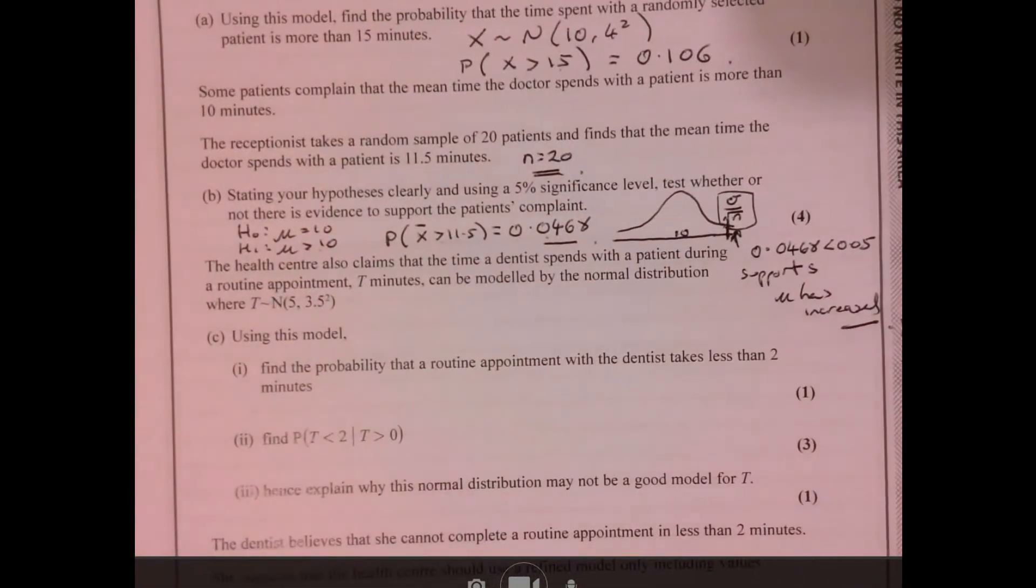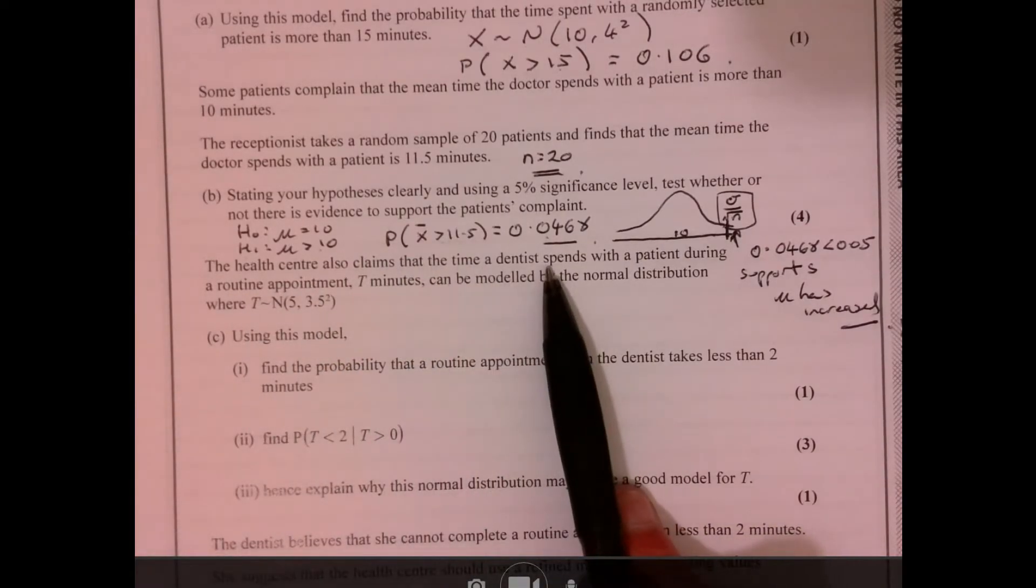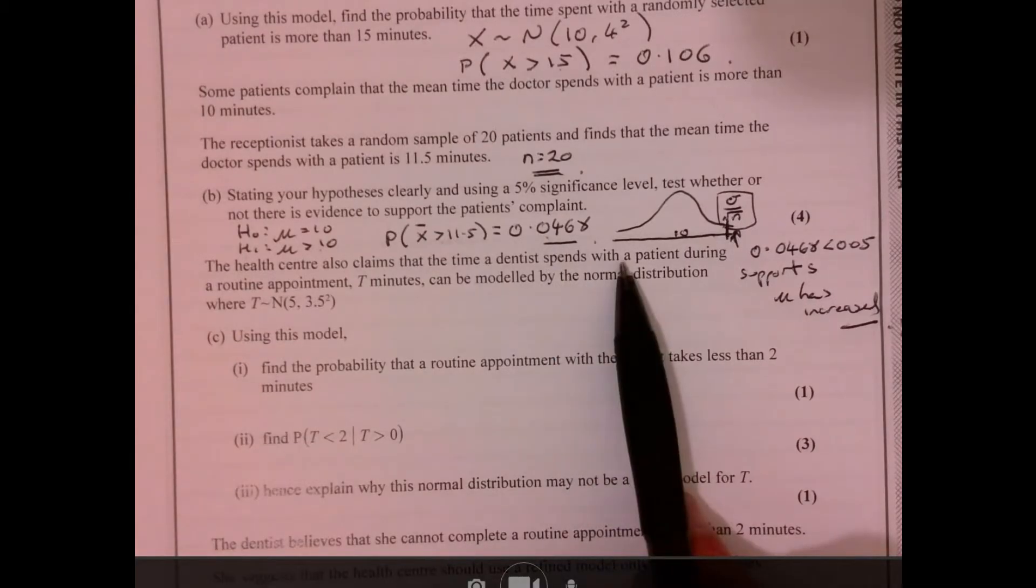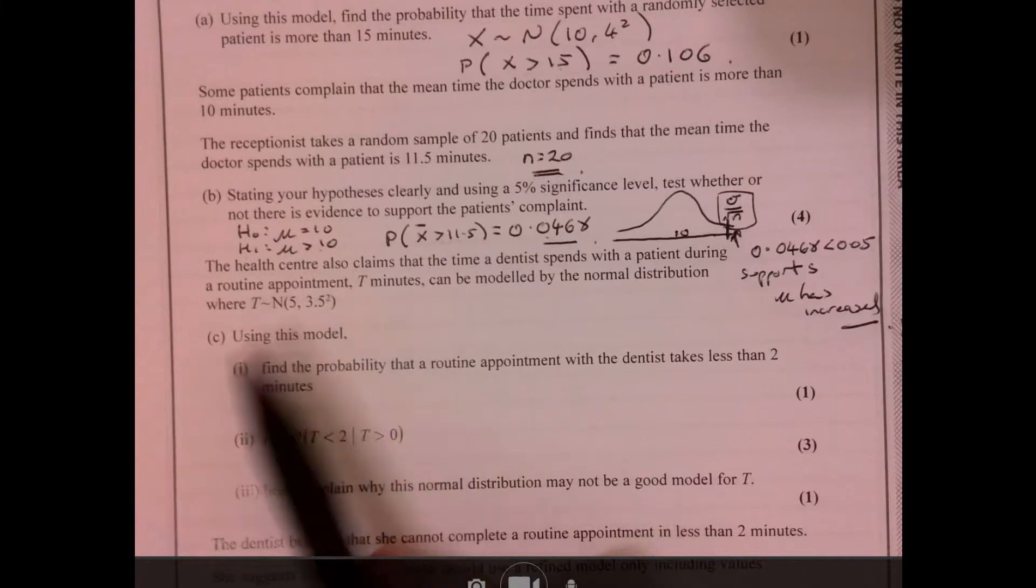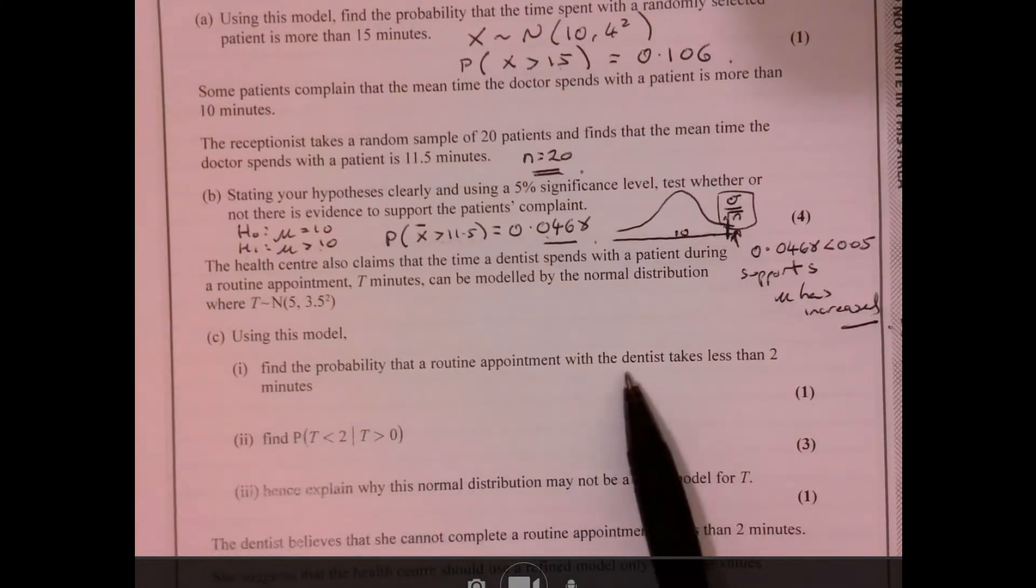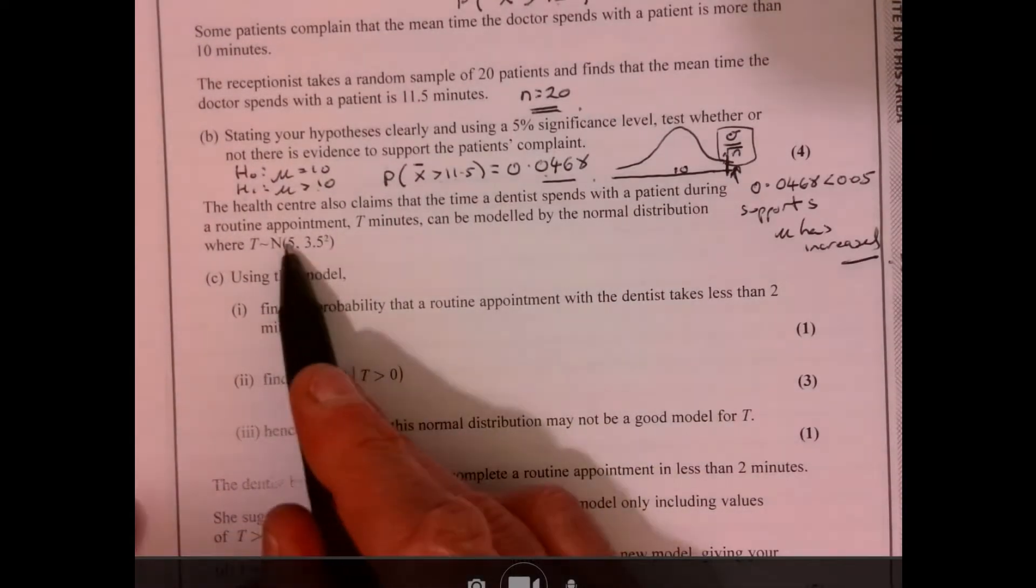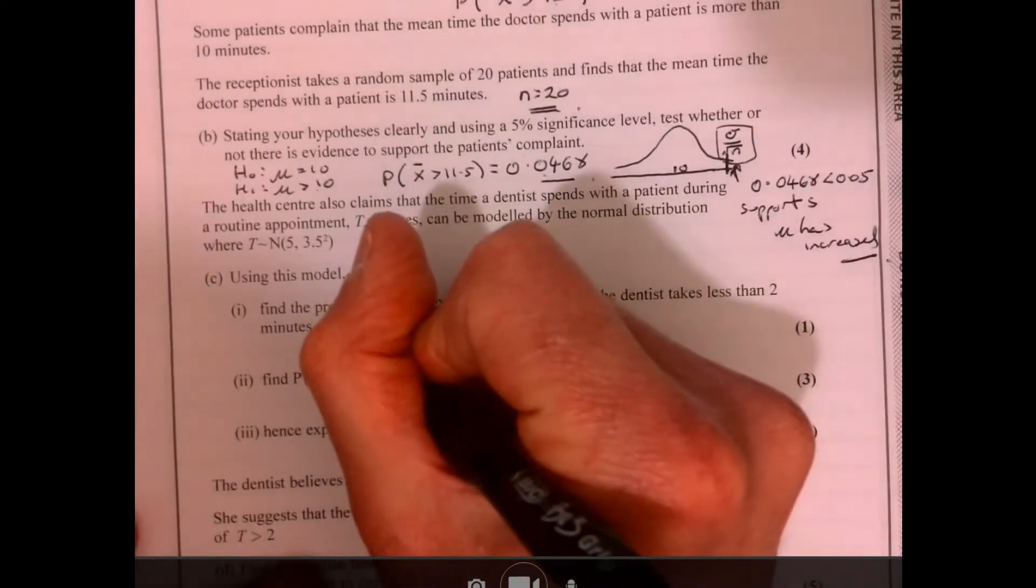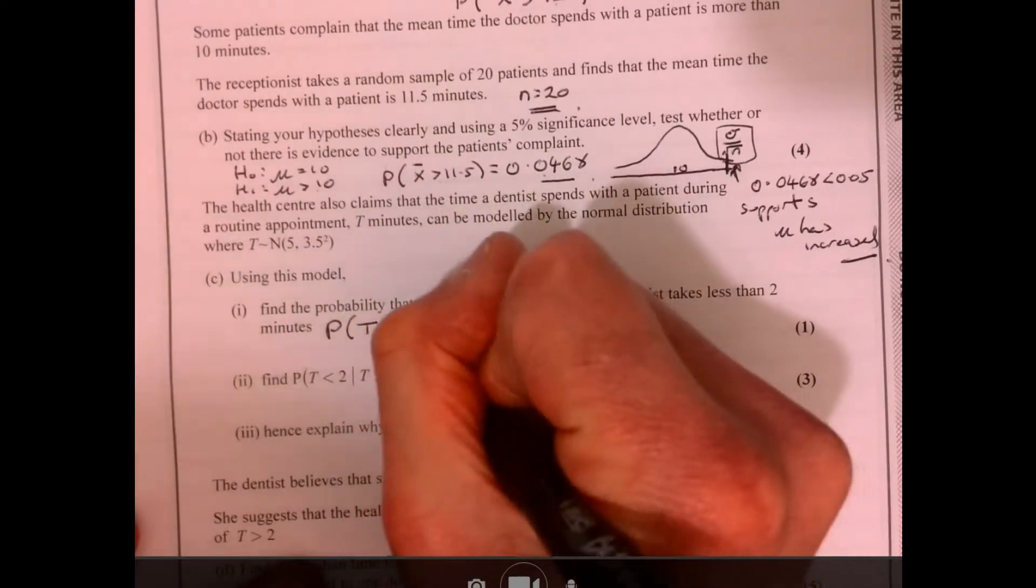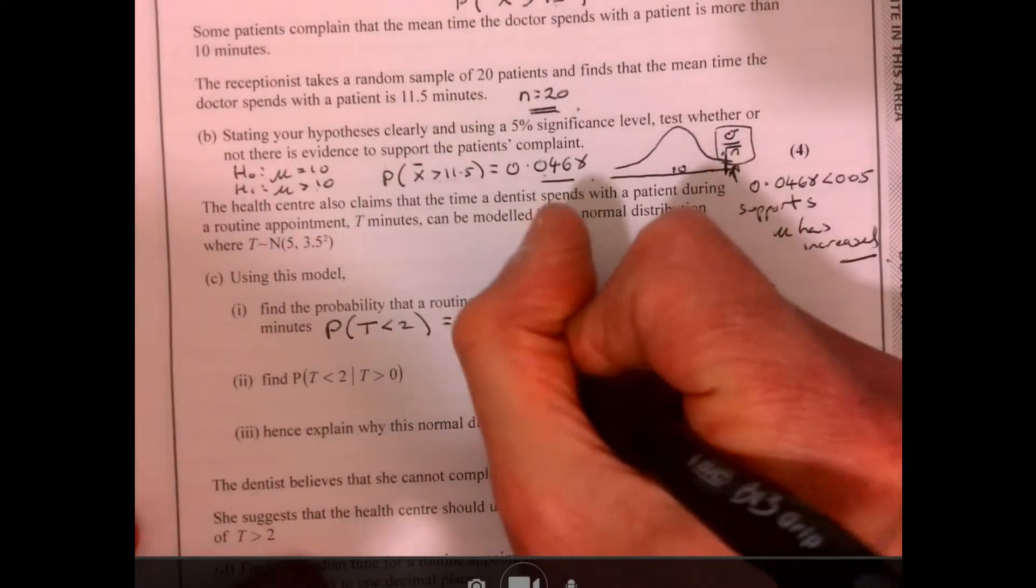Let's have a look at part C. Now we're given some different information here. So we've got a dentist. We're talking about dentists now. With a patient, during a routine. So we've got a different model. So using this model, find the probability that routine appointment dentist takes less than two minutes. So I'm using these parameters. And then all I'm going to do is I'm going to work out the probability that T is less than two. So I'm just going to put those things into my calculator.